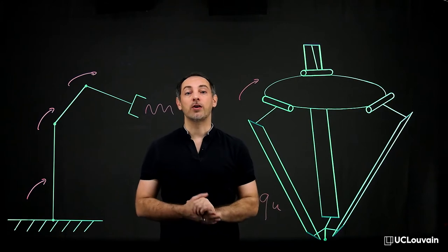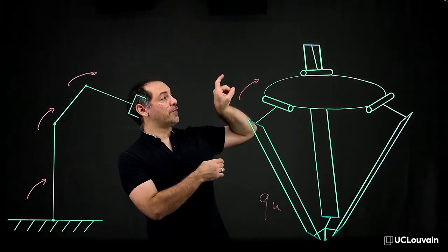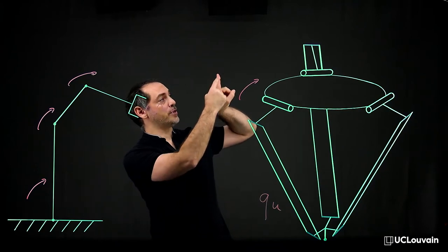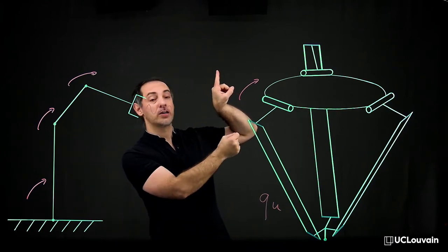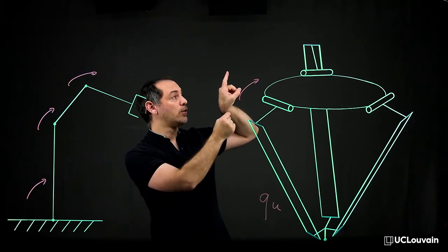An example of underactuated system in the human body could be the finger, where you have these three joints that could be considered as underactuated by one muscle for that motion.